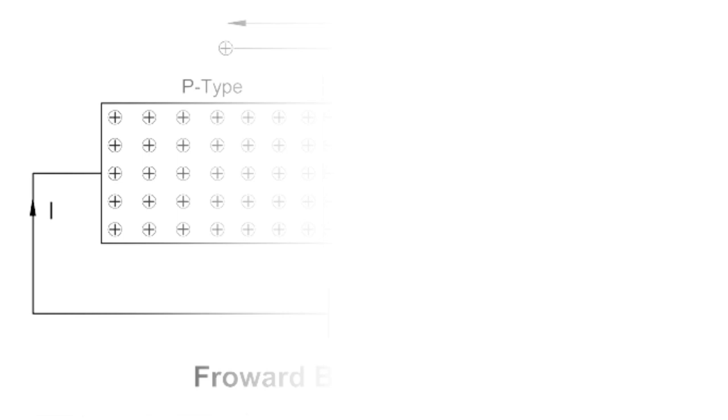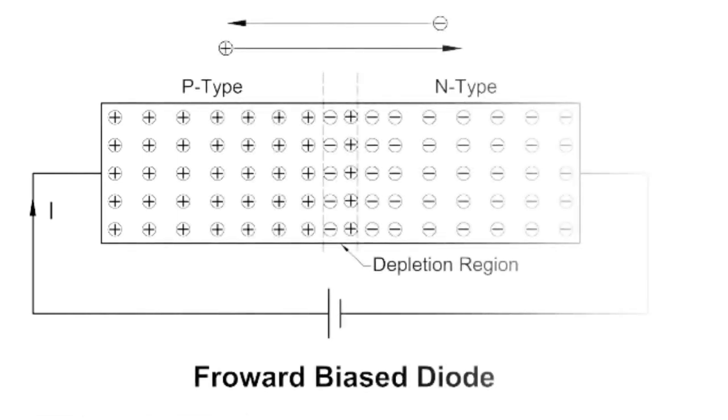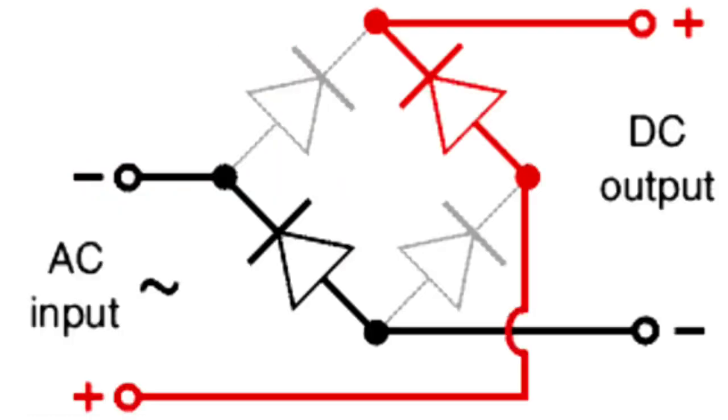The behavior of diodes in forward and reverse bias makes them useful in various electronic circuits, such as rectifiers (converting AC to DC), voltage regulators, and signal demodulation.